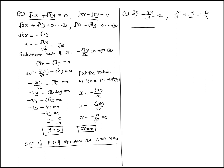For question number 6, we are taking LCM of 2 and 3; LCM of 2 and 3 is 6. This gives 9x minus 10y equal to minus 12. So 9x equal to 10y minus 12. This is equation number 1, and equation number 2 follows.